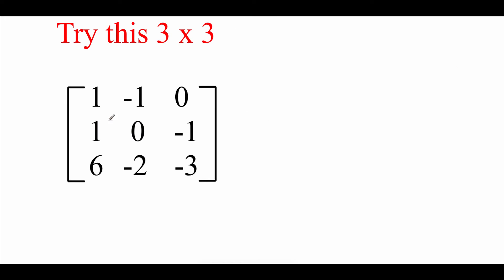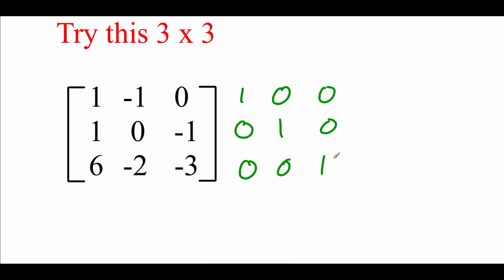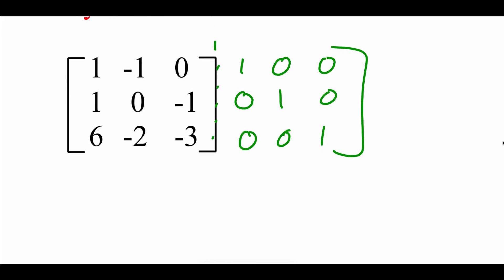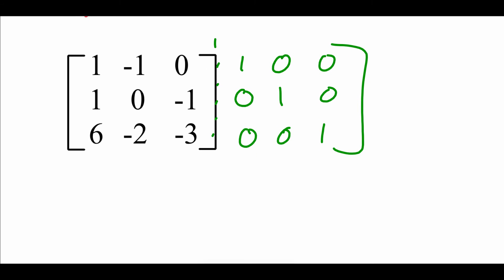Now checking out a 3x3 matrix — just like with the 2x2, the first thing we're going to do is attach an identity matrix onto the end. So we attach a 3x3 identity: 1, 0, 0 / 0, 1, 0 / 0, 0, 1. We're attaching that onto the end of our 3x3 matrix, and now we're going to work on getting this into row echelon form, then reduced row echelon form.